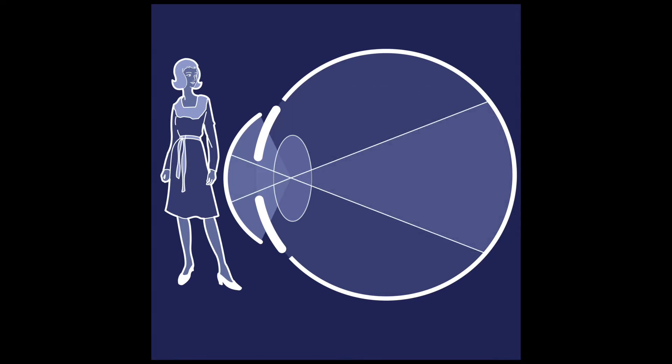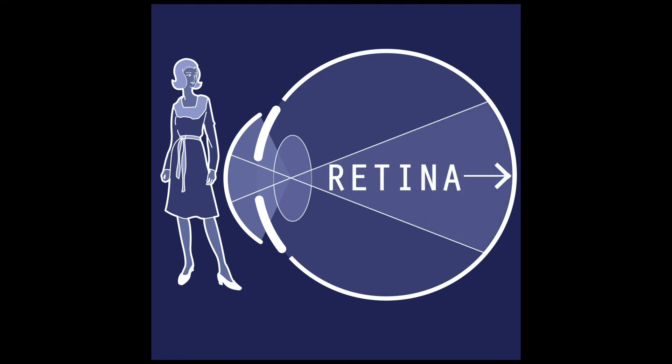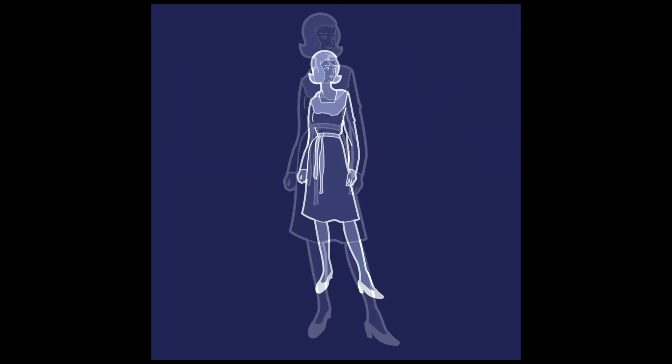However, the curved nature of the eye's focal parts also flip the image as it's projected onto the retina at the back of the eye. No worries, however — your brain turns all the information it receives right side up again, producing the result most of us are familiar with.